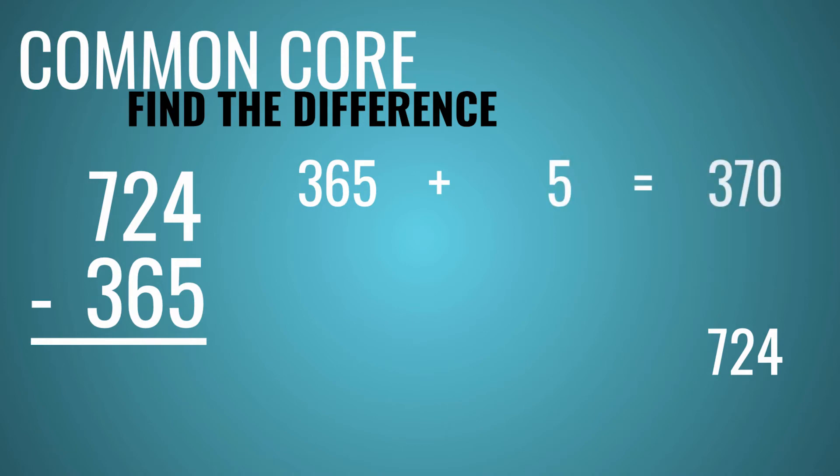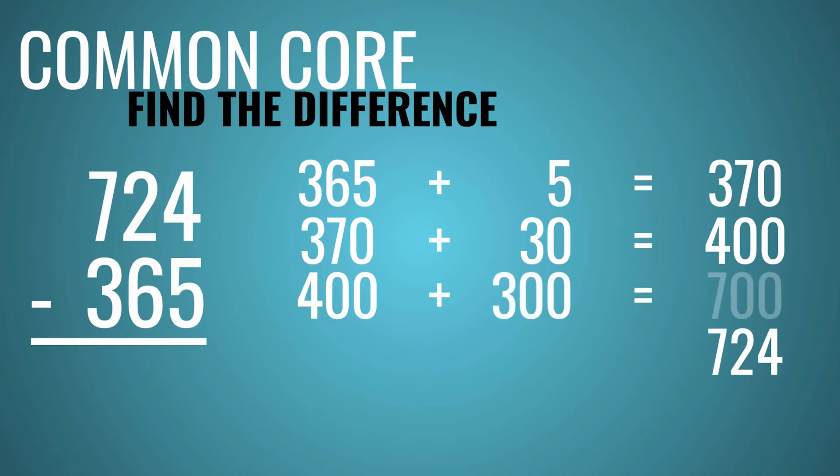So you'd start with 365 and you'd add 5 to get 370. From 370, you would add up 30 to get to 400. Notice what I'm doing here. I'm just trying to add to make numbers easier for me to deal with. So then we go from 400, we add 300 to get 700. 700 plus 24 is 724.